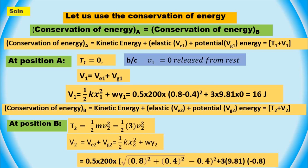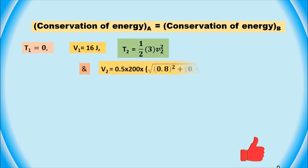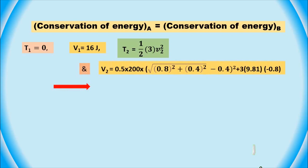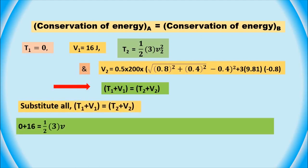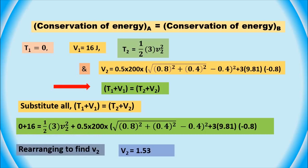So we can set these two equations equal to each other and solve for V. Setting up the equation: 16 equals half times mass 3 kilograms times velocity squared, plus half times spring constant 200 times the quantity (square root of 0.8 squared plus 0.4 squared minus 0.4) squared, plus mass 3 times gravity 9.81 times minus zero. The velocity of the slider at point B equals 1.537 meters per second.